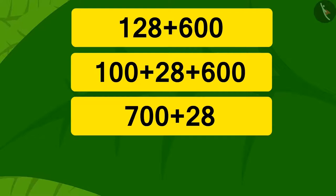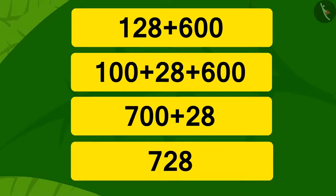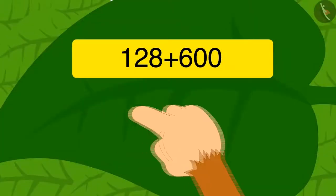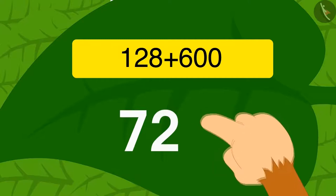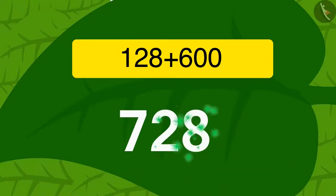Babu wrote 728 as the answer on the vine leaf and the vine got smaller by sinking down even further. Now there are only three puzzles left on the vine.